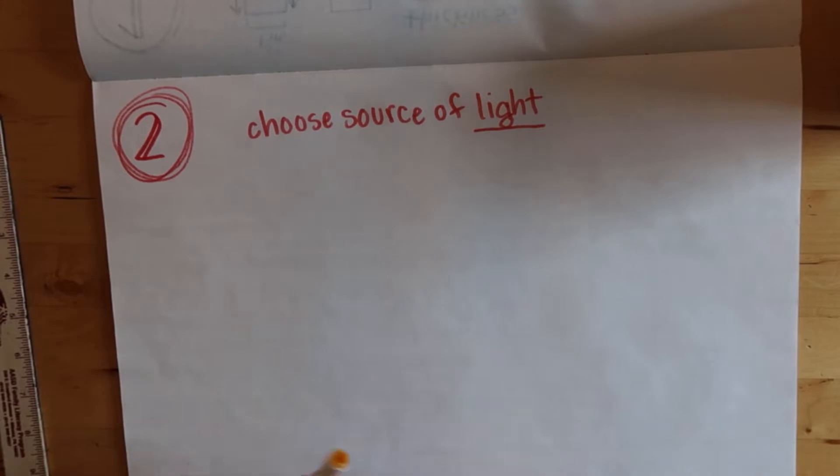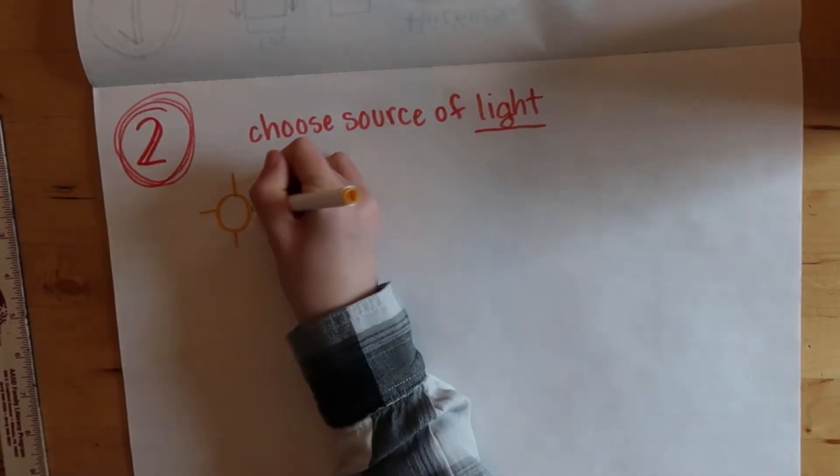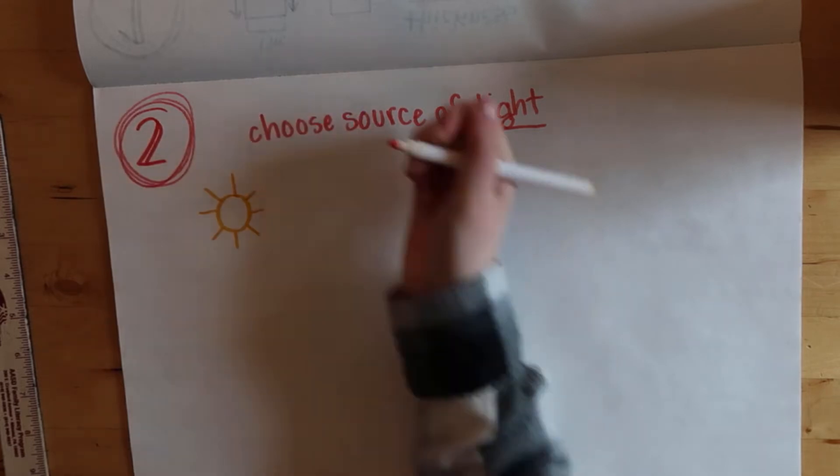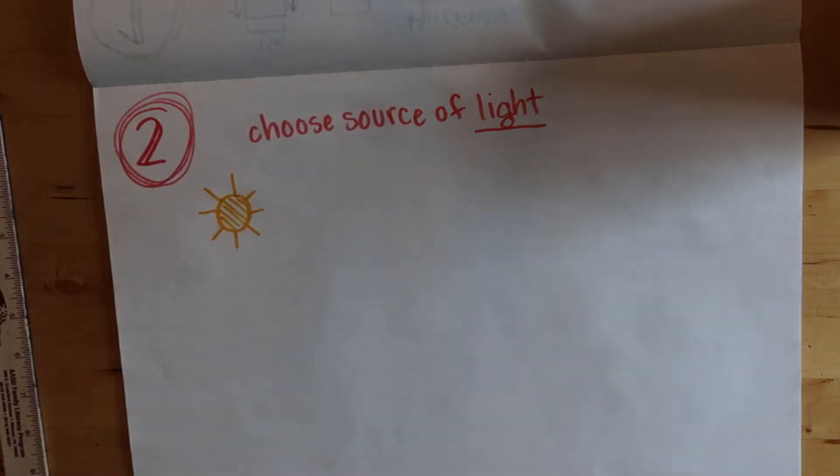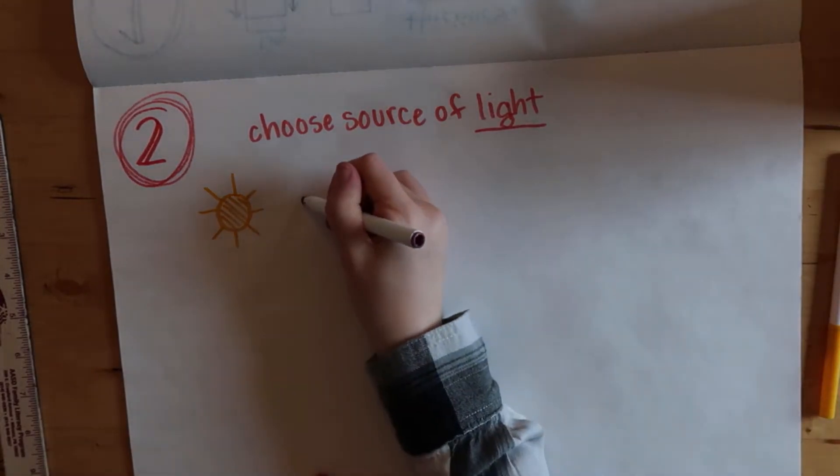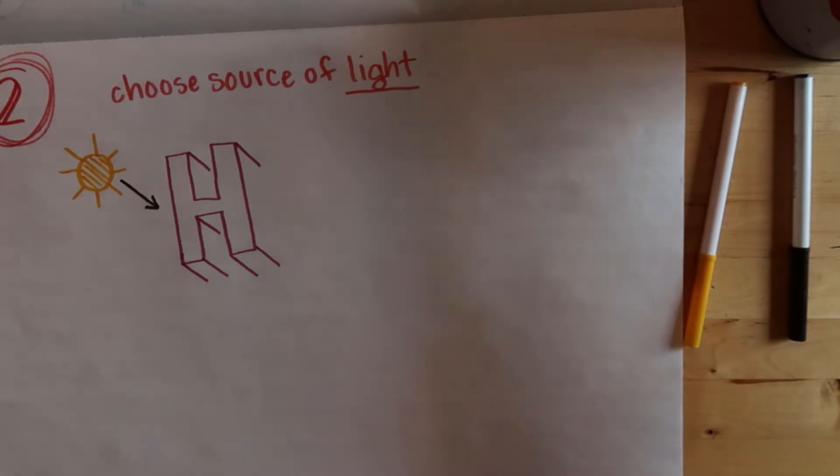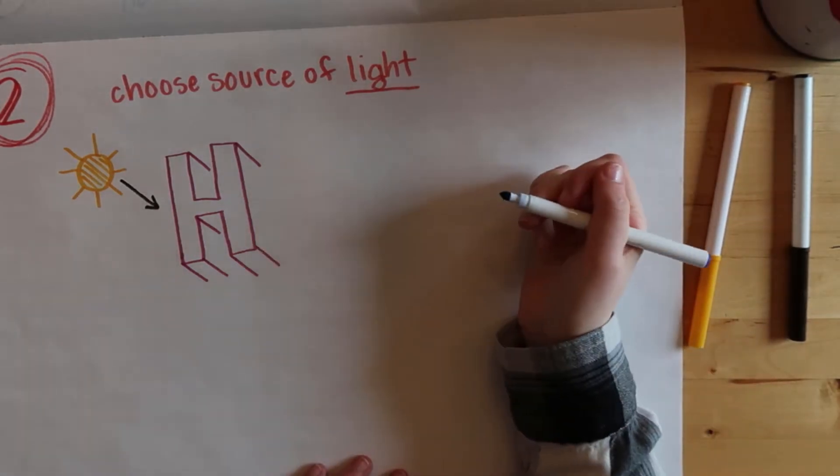Okay, so the second thing to make your 3D letters look better is to choose a source of light. I mean you don't have to choose if it's the sun or a light bulb, you just have to choose where the light is coming from. It can be from the upper left hand corner or the bottom right.